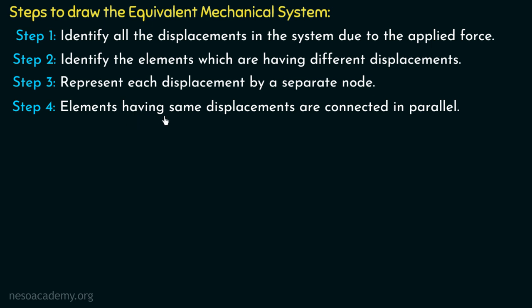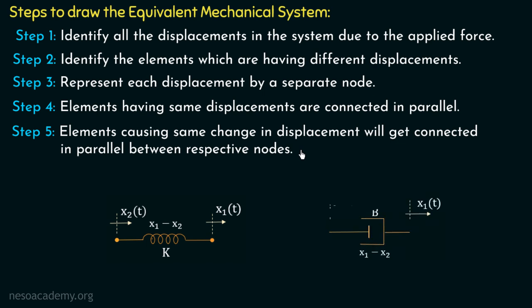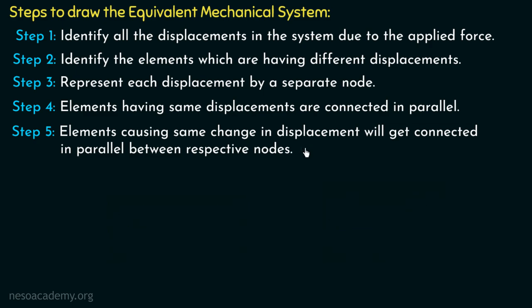In step number four, elements having the same displacements are connected in parallel. So if two or more elements have the same displacement, we connect them in parallel. Step number five states that elements causing the same change in displacement will get connected in parallel between their respective nodes. For example, if the net displacement in a spring is x1 minus x2, and the net displacement in a damper is also x1 minus x2, we connect the spring and damper between the two nodes x1 and x2.